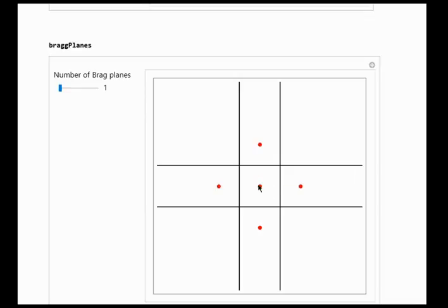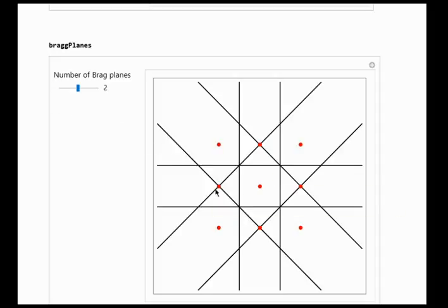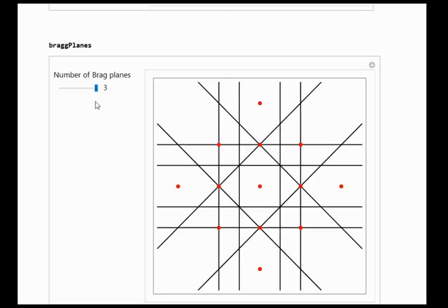Now we can show the Bragg planes for the closest neighbors with this being our original lattice point. These are the four closest neighbors in a simple square lattice because it's in 2D. And if we add the second lattice vectors for the second closest neighbors, you can see these ones. It essentially conveys the same information. But when we go to a higher order of closest neighbors, we can see that the system gets a lot more complex. So now we've seen what our Bragg planes are, let's go to Brillouin zones.